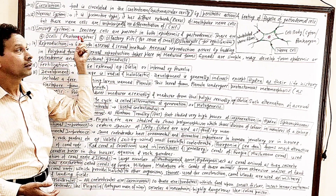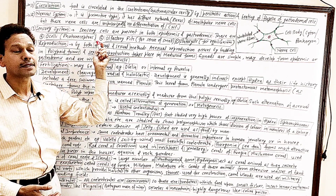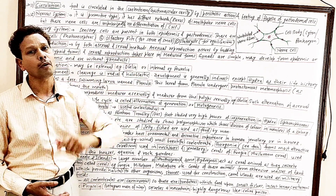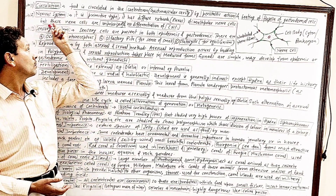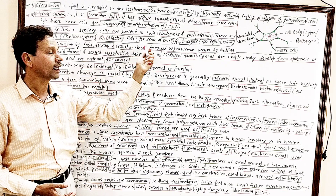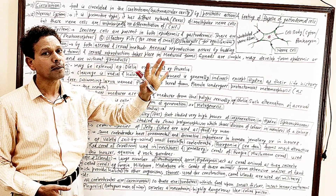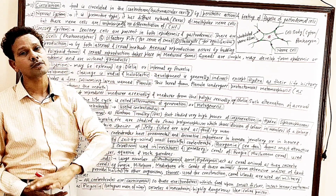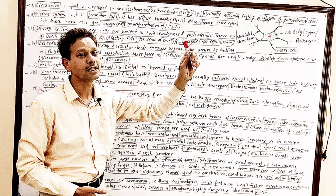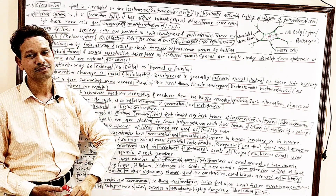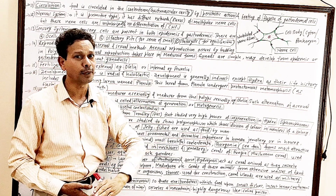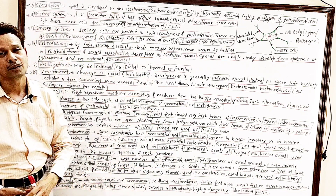Several types of sensory cells are present: ocelli, which are photoreceptor cells; olfactory pits, which are meant for the sense of smell — very important for competitive students; and statocysts, which are cells involved in equilibrium and balancing the body.